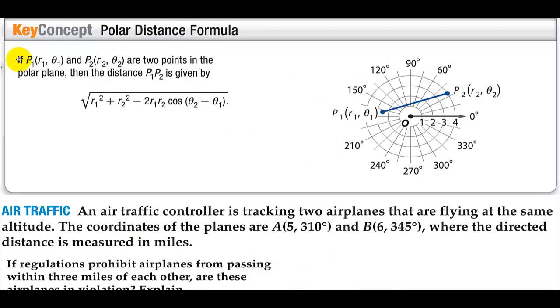Polar distance formula. If point 1 and point 2 are two points in the polar plane, then the distance P₁P₂ is given by this formula. This is really the law of cosines.